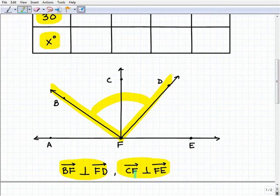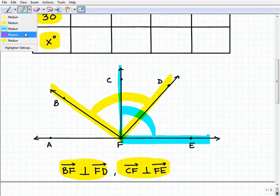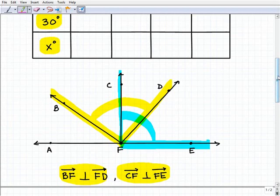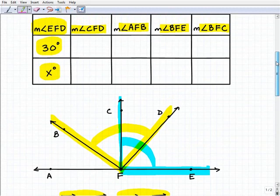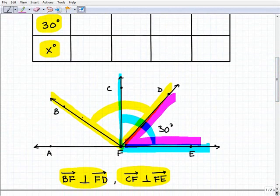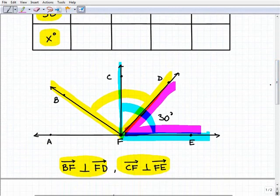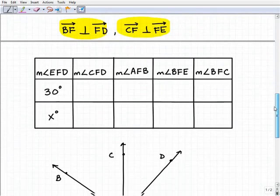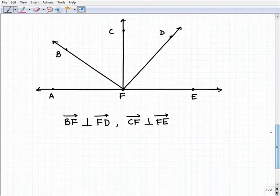And ray CF is perpendicular to ray FE, so this angle right here is 90 degrees. The angle that we're given to basically kick this problem off is angle EFD. So we'll go ahead and start when EFD is 30 degrees, and we'll use all this information to find all the rest of these angles and fill in our chart.